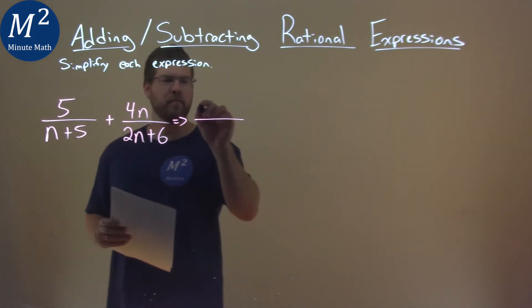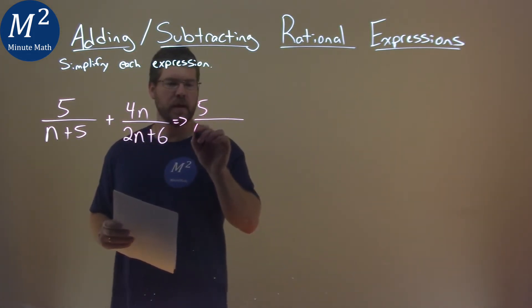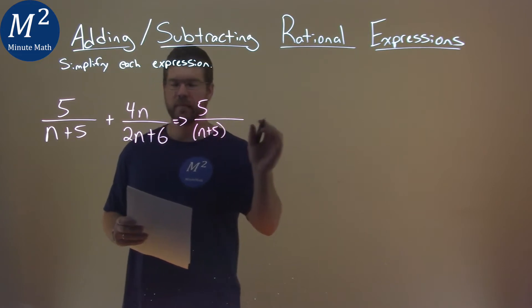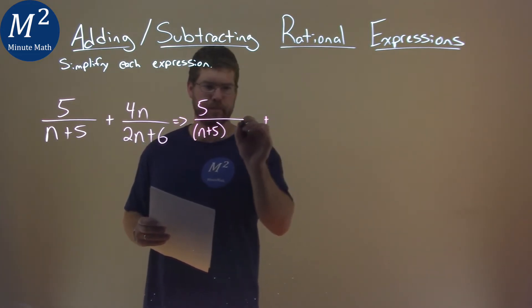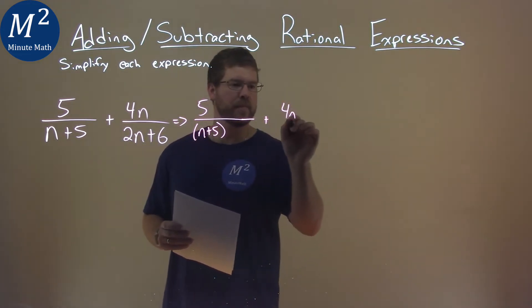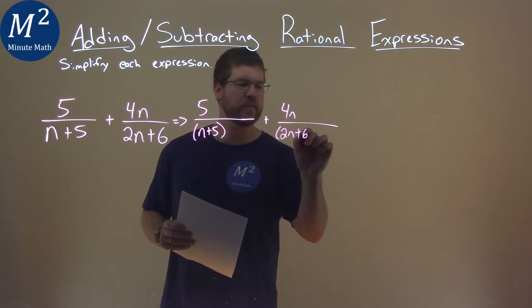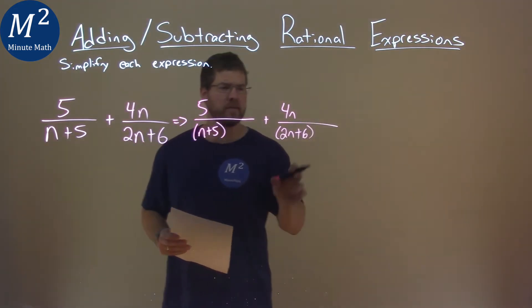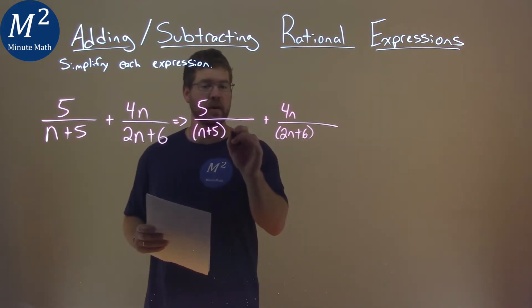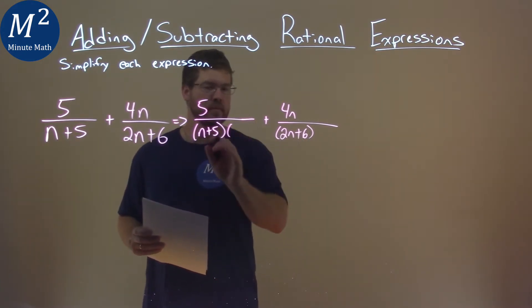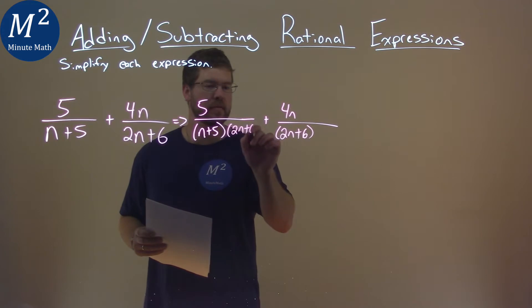So, a way to do that, I'm going to rewrite the problem: 5 over n plus 5 here, and then we have plus sign, and we have again 4n over 2n plus 6. And a way to do that is to take this denominator, 2n plus 6, and multiply it to the other one right here, 2n plus 6 over itself, 2n plus 6.